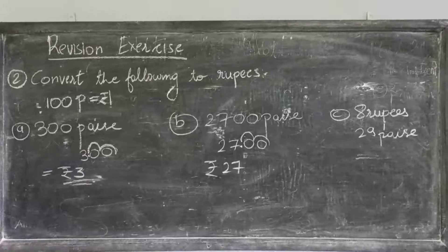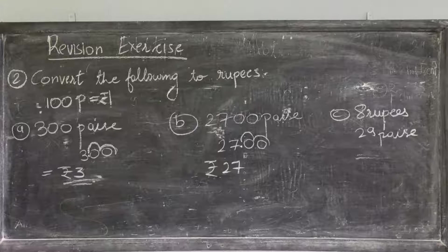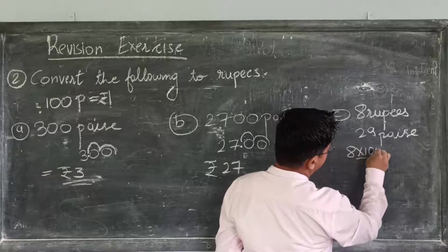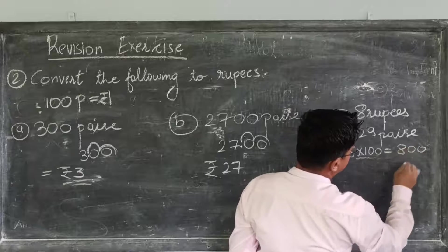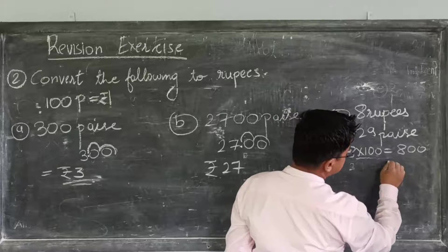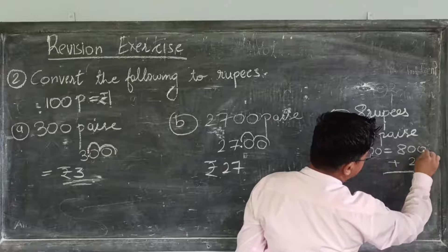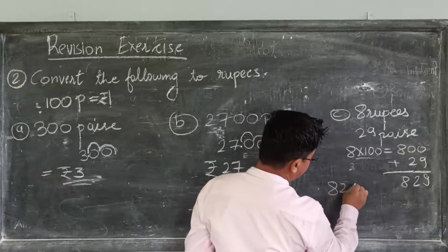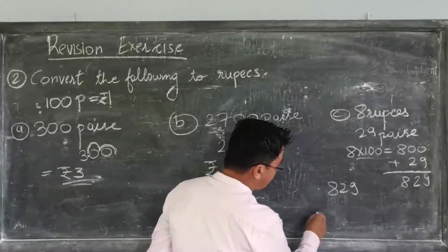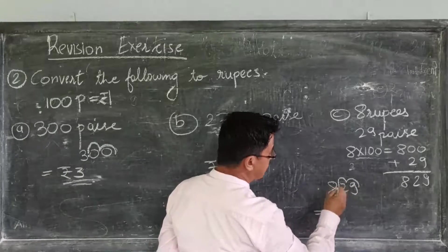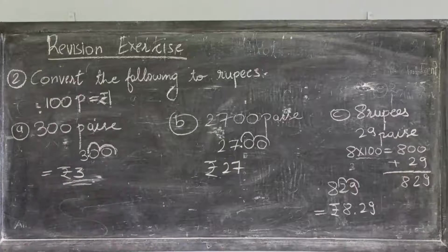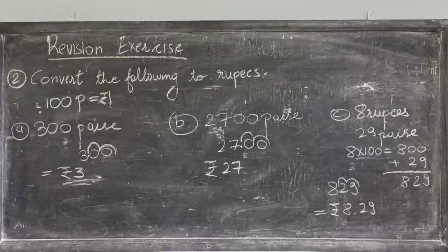Now, C: 8 rupees and 29 paise. 8 rupees is equal to 8 into 100, which is 800 paise. Plus 29 paise gives us 829 paise. Now, to convert 829 paise into rupees, leave 2 places from the right and put a dot. It will be rupees 8 and 29 paise.